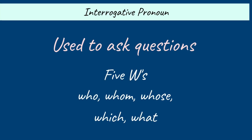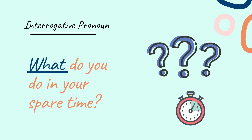Number six: Interrogative pronoun. It is used to ask a question. The five pronouns used for this purpose are: Who, Whom, Whose, Which, and What. For example: 'What do you do in your spare time?' Here, the interrogative pronoun 'What' is used to frame a question.